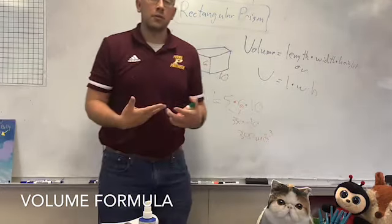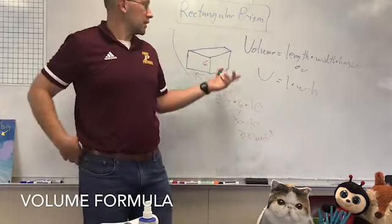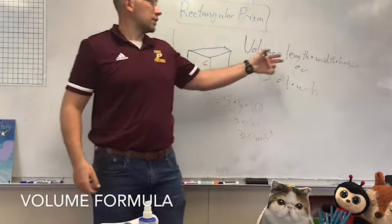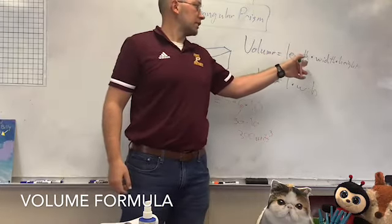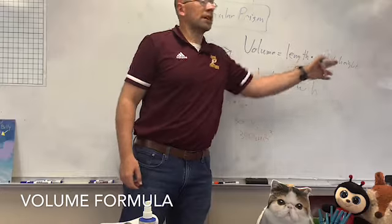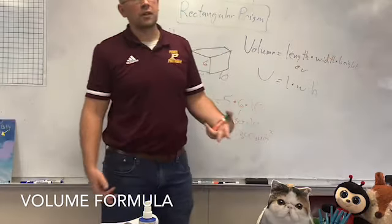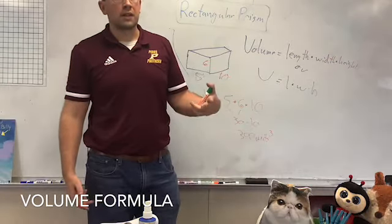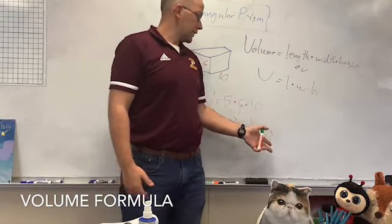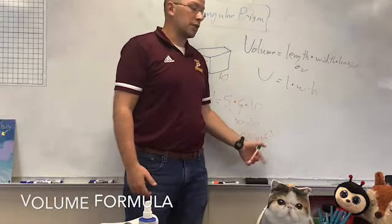Something cubed is how you label volume because you're multiplying three things — length times width times height. When you find area, you're only multiplying two things together, so it's squared. Volume is always cubed.